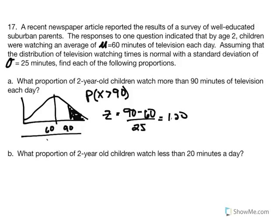We convert 90 minutes to a Z value: Z equals (90 minus 60) divided by 25, giving Z equal to 1.20. This is the same as finding the probability of a Z value greater than 1.20, which corresponds to the tail of the distribution. We use the unit normal table to find the tail proportion.